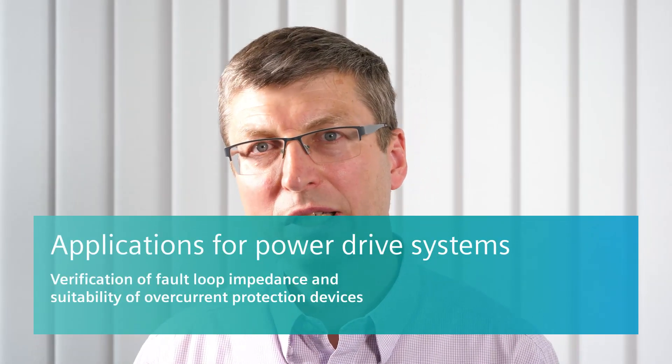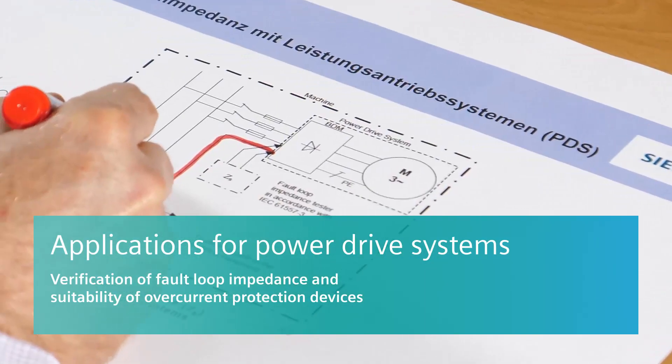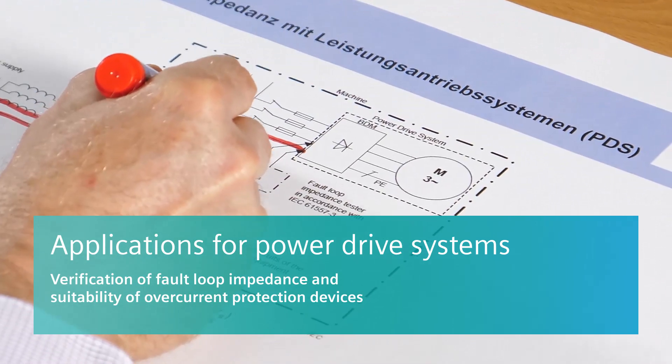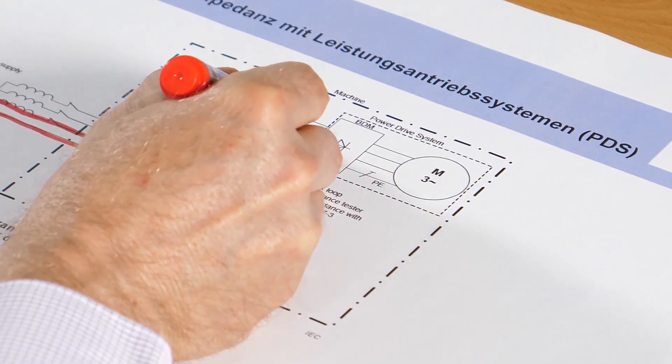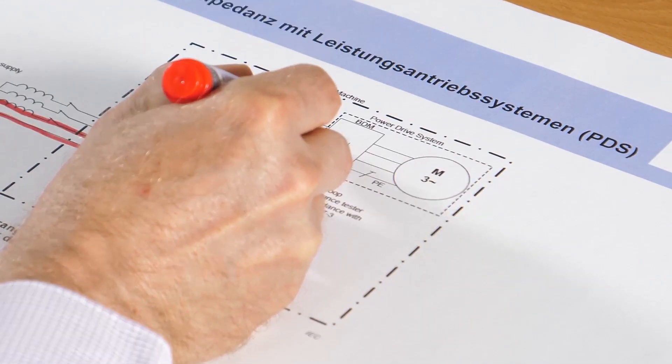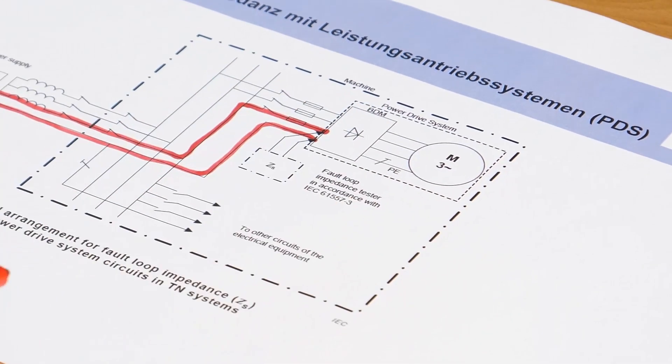Let us start with the applications for power drive systems. Here a fault loop measurement has been newly incorporated into the standard, which automatically switches off to provide protection. It precisely describes the tests and measurements that the user must perform in order to implement this protection in practice.